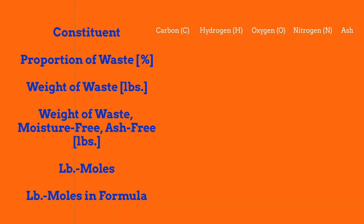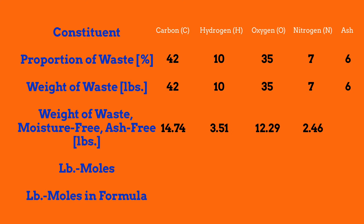I've constructed a table to keep track of our calculations. We have 100 pounds of waste with the given percentages. We know it has 67% moisture and 6% ash, so we multiply each portion by 33% to represent the solid waste composition minus moisture, and divide by 94% to reflect the new weight proportion of the waste stream minus the ash. We get the following adjusted values, and then we divide each proportion by its molar mass to get the number of moles of each constituent.